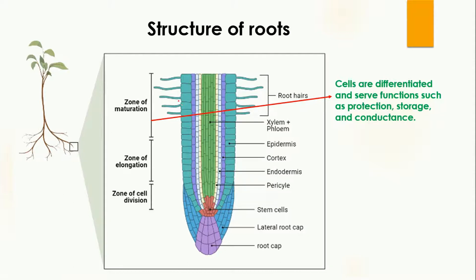If we talk about the internal structure of the root, the root is divided into three zones: the zone of maturation, the zone of elongation, and the zone of cell division. The zone of maturation is away from the tip of the root.